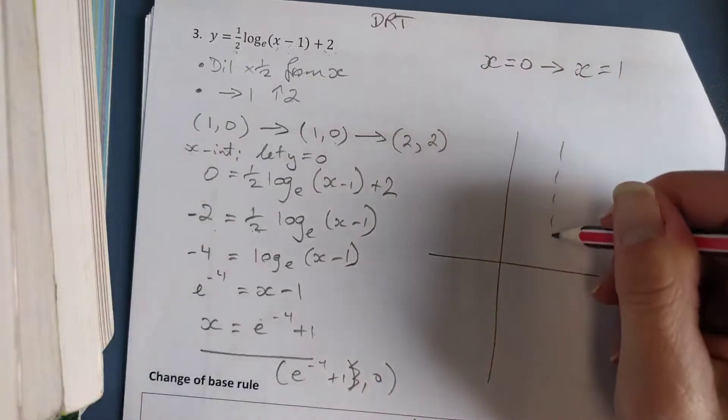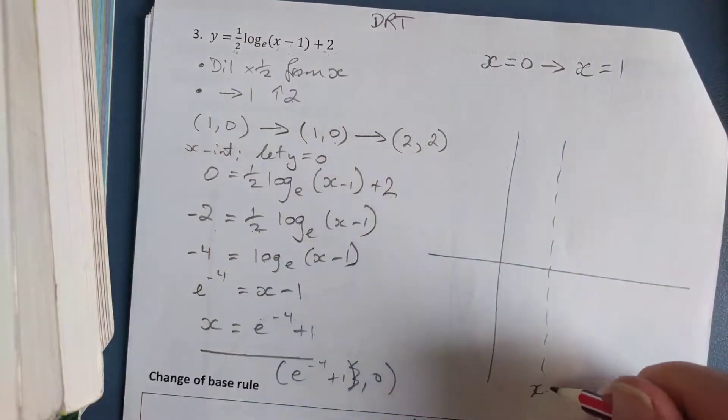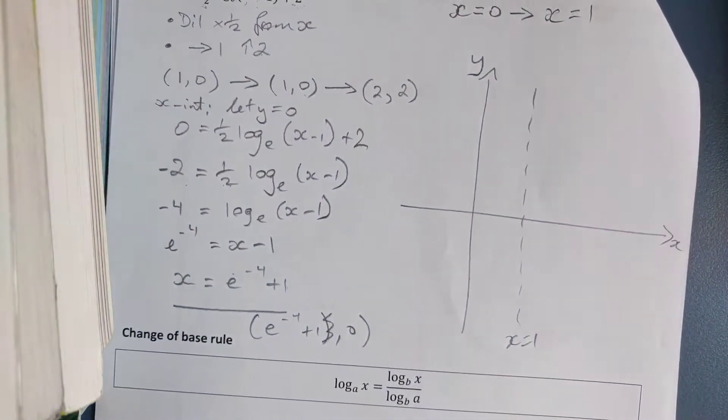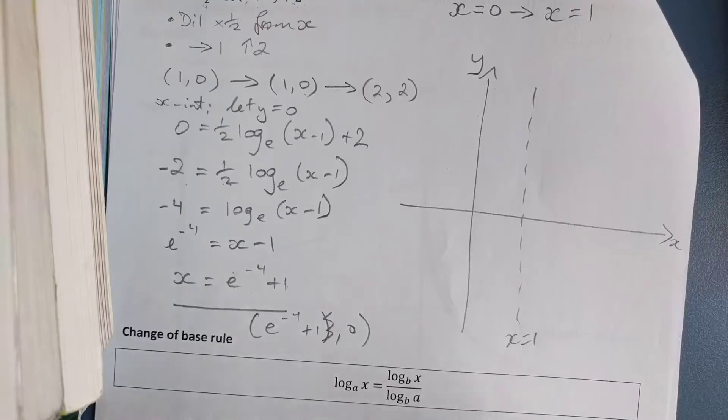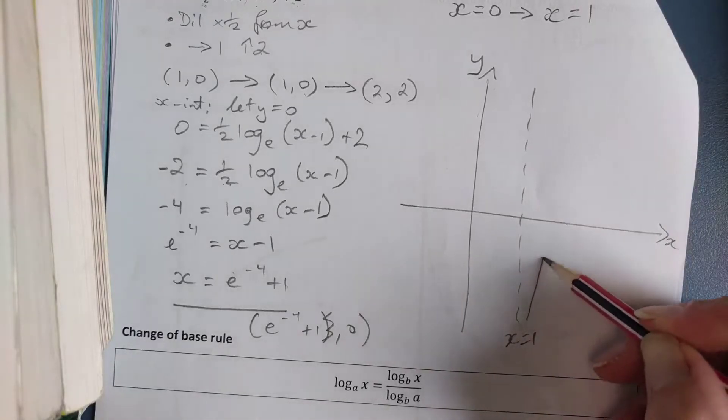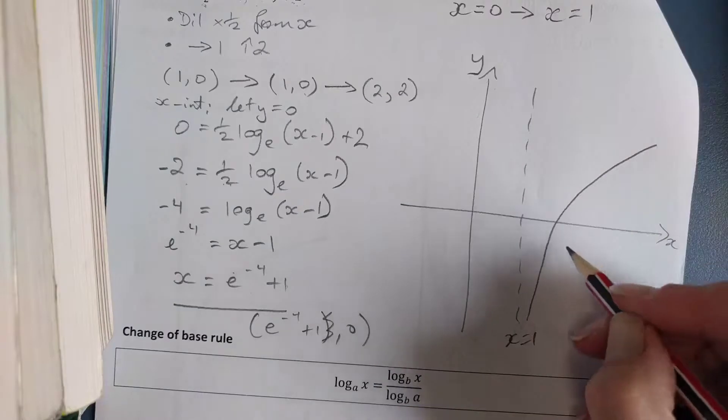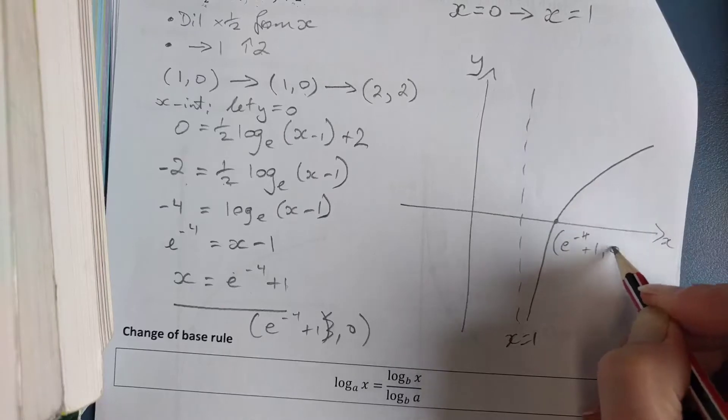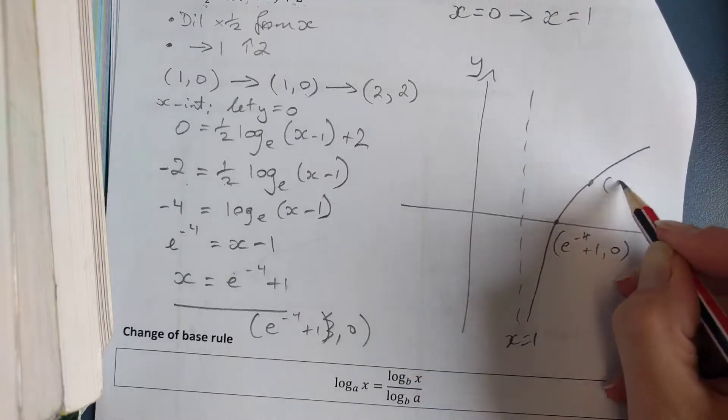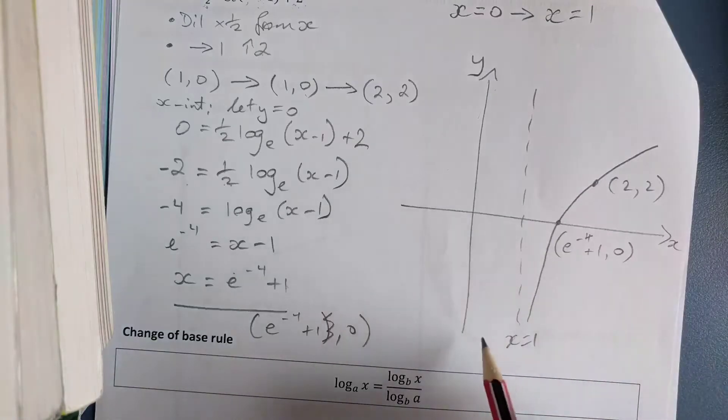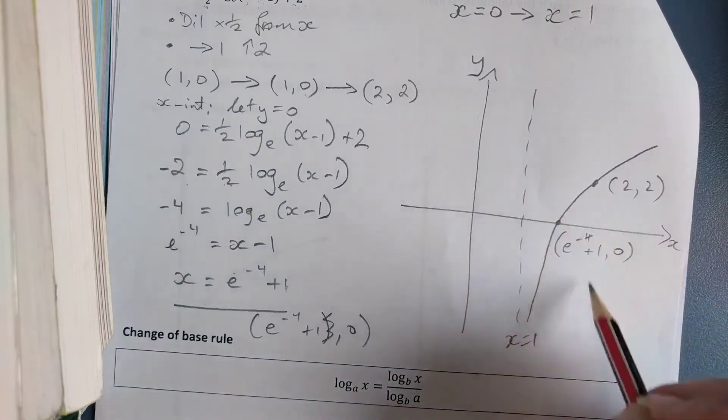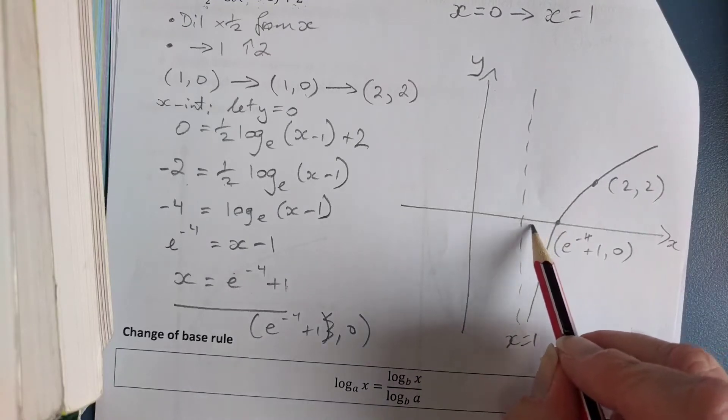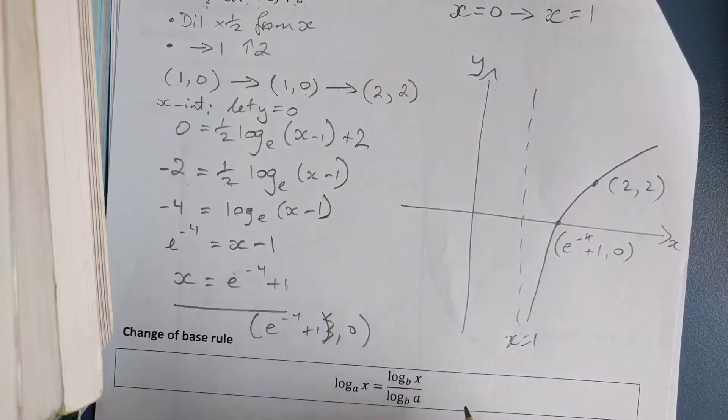So my asymptote is here at x equals 1. And then I'm going to put in the points that I know. So I'll just put in my sketch of my graph first. And then I've got e to the negative 4 plus 1, 0, and up here I've got the point 2, 2. And I'm just going to look at my scale. There's x is 1, there's x is 2. I'm happy with that. This should be a little bit closer here, but that's okay. I'm not going to think too hard about that.